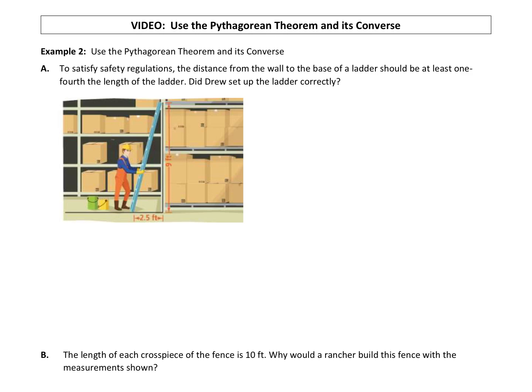Let's continue with our Pythagorean Theorem and bring in the converse of that a little bit. Part A: to satisfy safety regulations, the distance from the wall to the base of the ladder should be at least one-fourth the length of the ladder. Did Drew set up the ladder correctly?